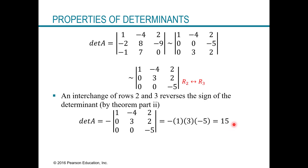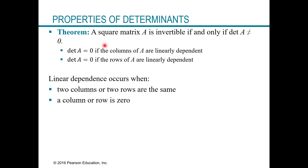Another theorem says a square matrix A is invertible — meaning it has an inverse — if and only if its determinant is not zero. The determinant is zero when the columns or rows of the matrix are linearly dependent. Quick ways to spot linear dependence: if you see two rows or two columns that are the same, they're automatically linearly dependent; and if you see a row or column that's all zeros, that also indicates linear dependence. In either case, the determinant is zero and the matrix has no inverse.